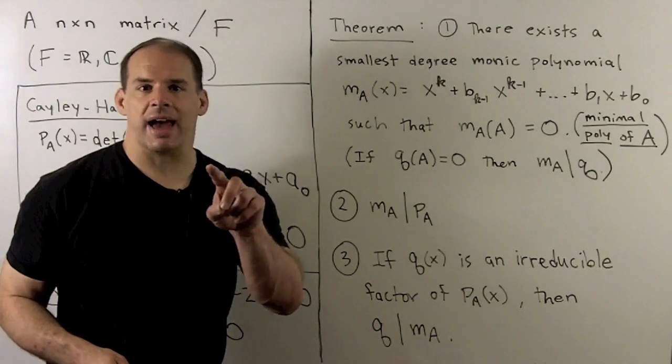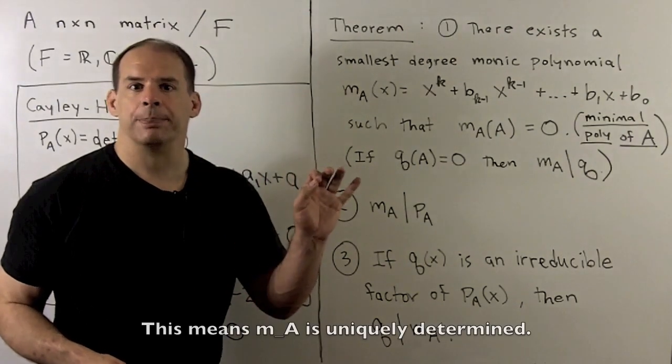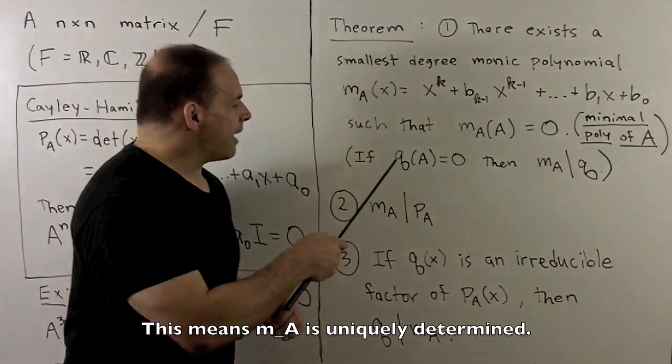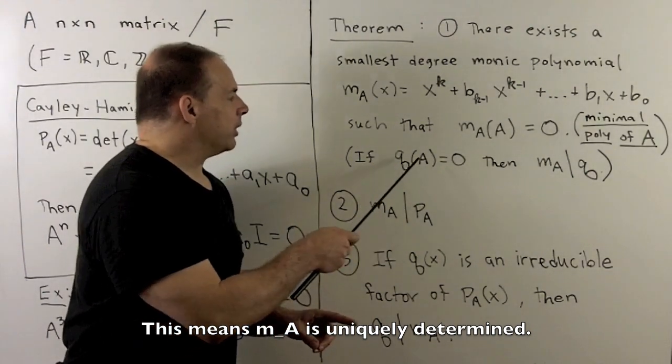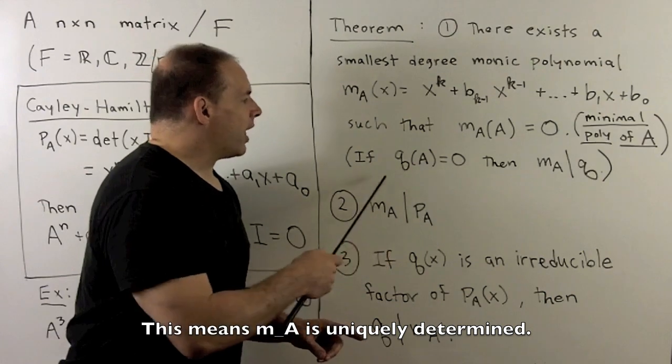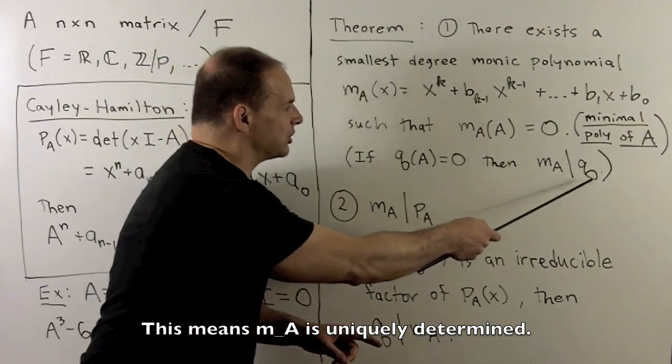Minimal because it'll have smallest degree with this property, but also because if I have any non-zero polynomial Q, such that if I put A in, we get the zero matrix out, then I'll have to have the M_A divides Q.